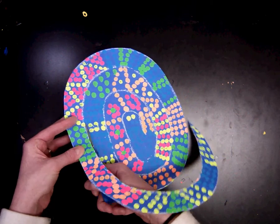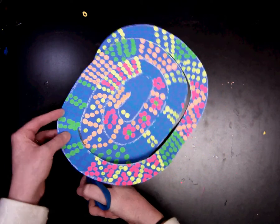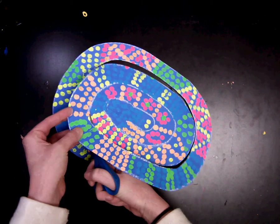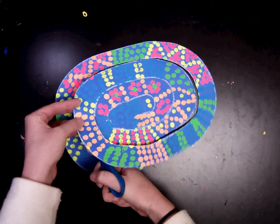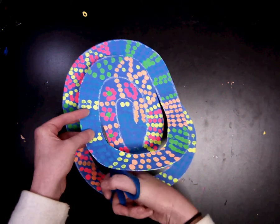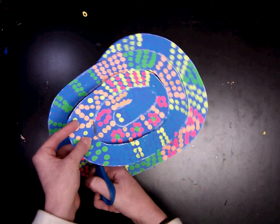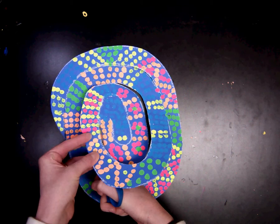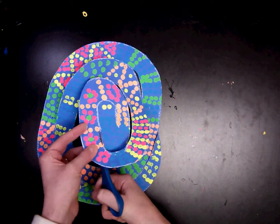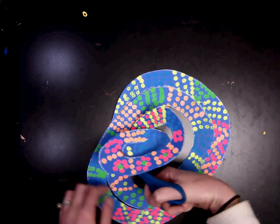Now we don't want to cut any part of our snake off, so be careful once you get to the head. You can see how I am kind of just turning my snake, keeping it in the same position, turning it as I go. Again we will be a little careful as we get to the head because we don't want to cut the head off. Go ahead and start cutting out your snake.